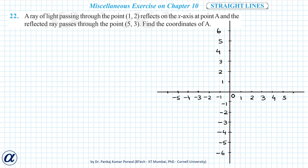In this question, a ray of light passing through point (1,2) reflects on the x-axis at point A, and the reflected ray passes through point (5,3). We need to find the coordinates of point A. Let me first draw these points. The incident ray passes through point (1,2) and the reflected ray passes through point (5,3), so the incident ray will be like this and the reflected ray will be like this.